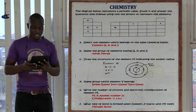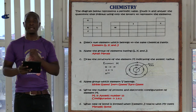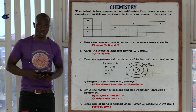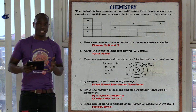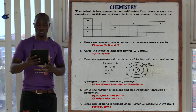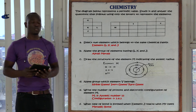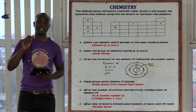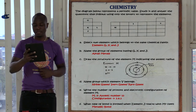The next question asks: write the number of protons and electronic configuration of element M. The atomic number is directly proportional to the number of protons. For element M, the atomic number is 13, so it has 13 protons. The electronic configuration is 2-8-3.